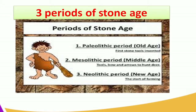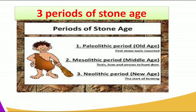The Stone Age periods are divided into three. First, the Paleolithic period, also known as the Old Stone Age period — this is where the first stone tools were invented, known as the old worn tools. Second, the Mesolithic period — meso means middle — also known as the Middle Stone Age period, where bows and arrows for hunting were made.